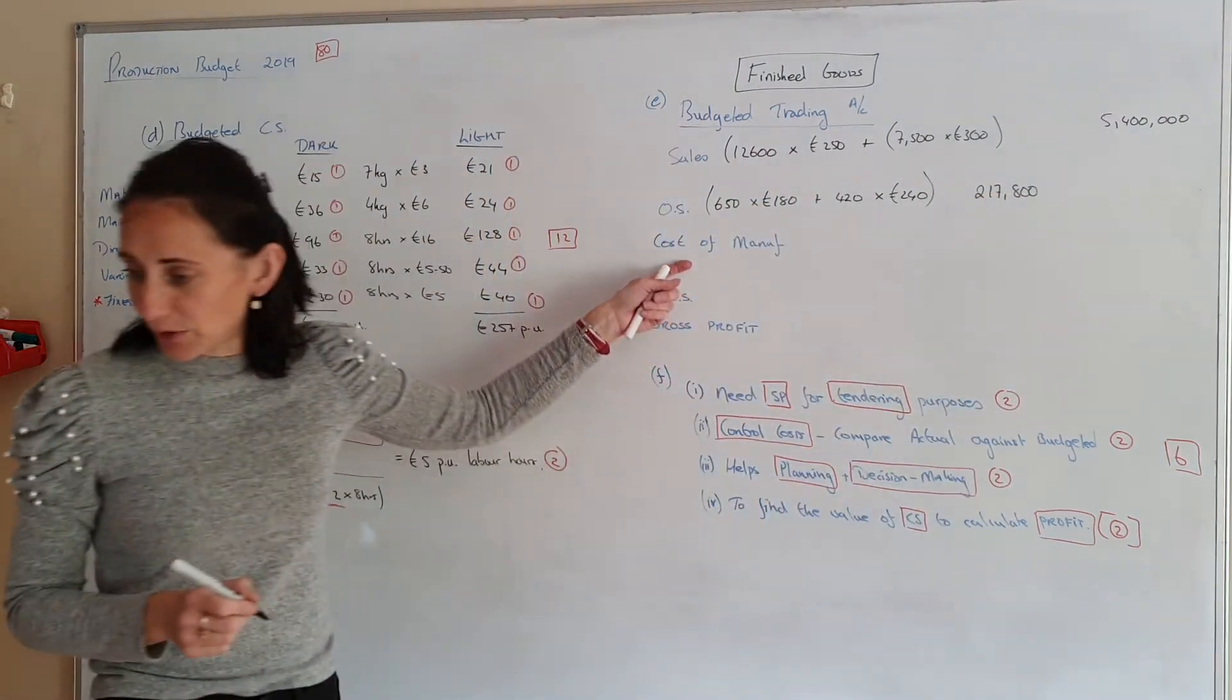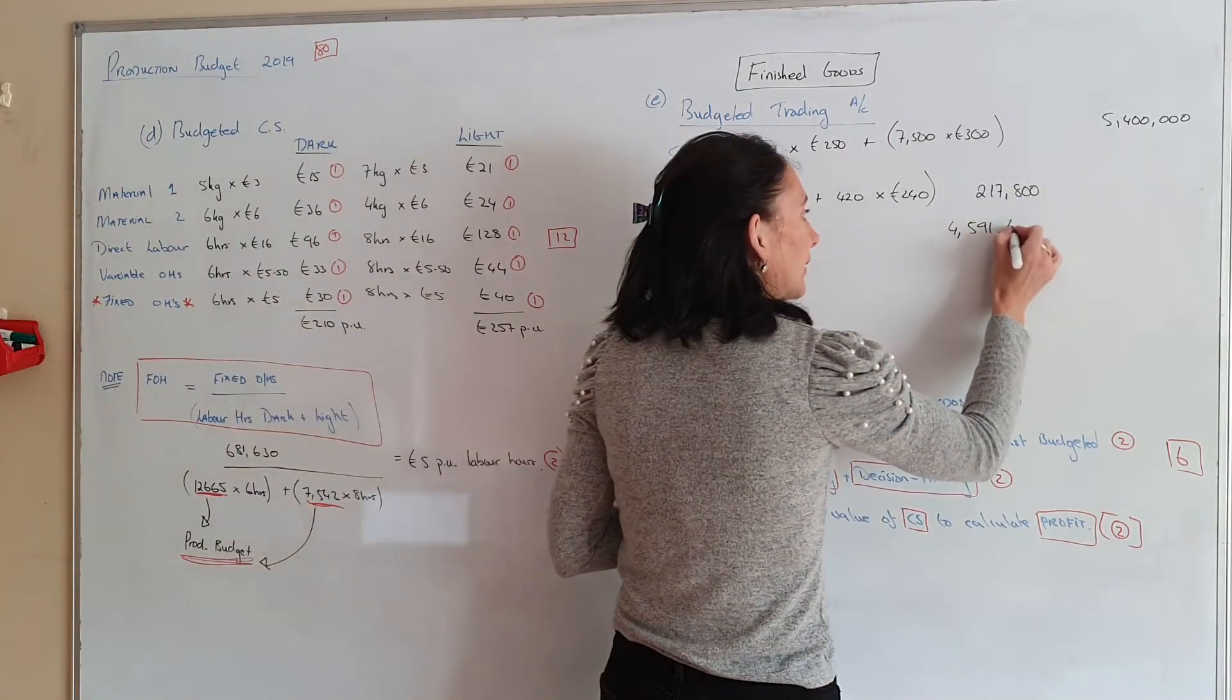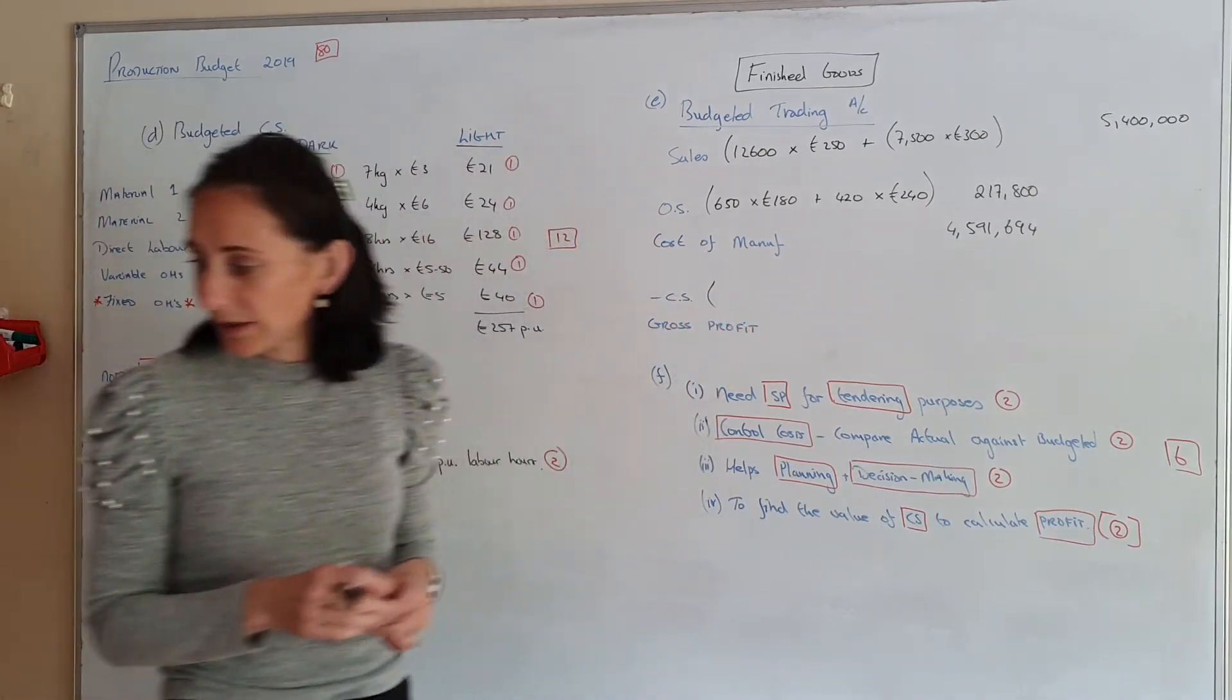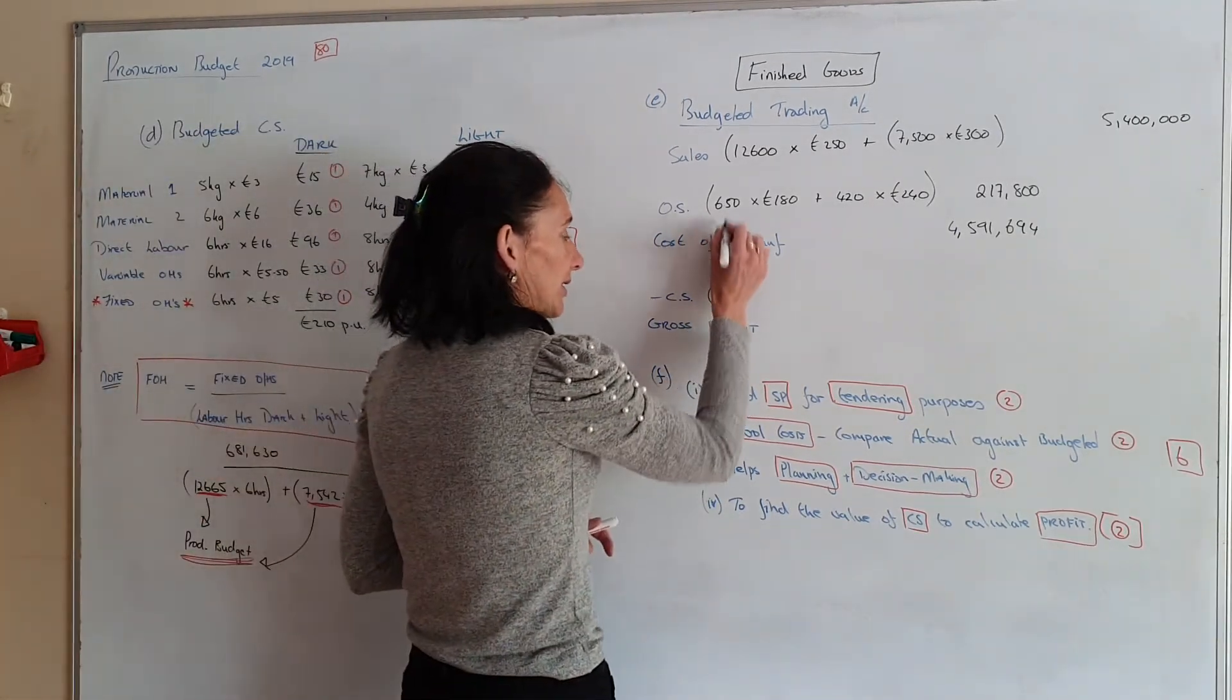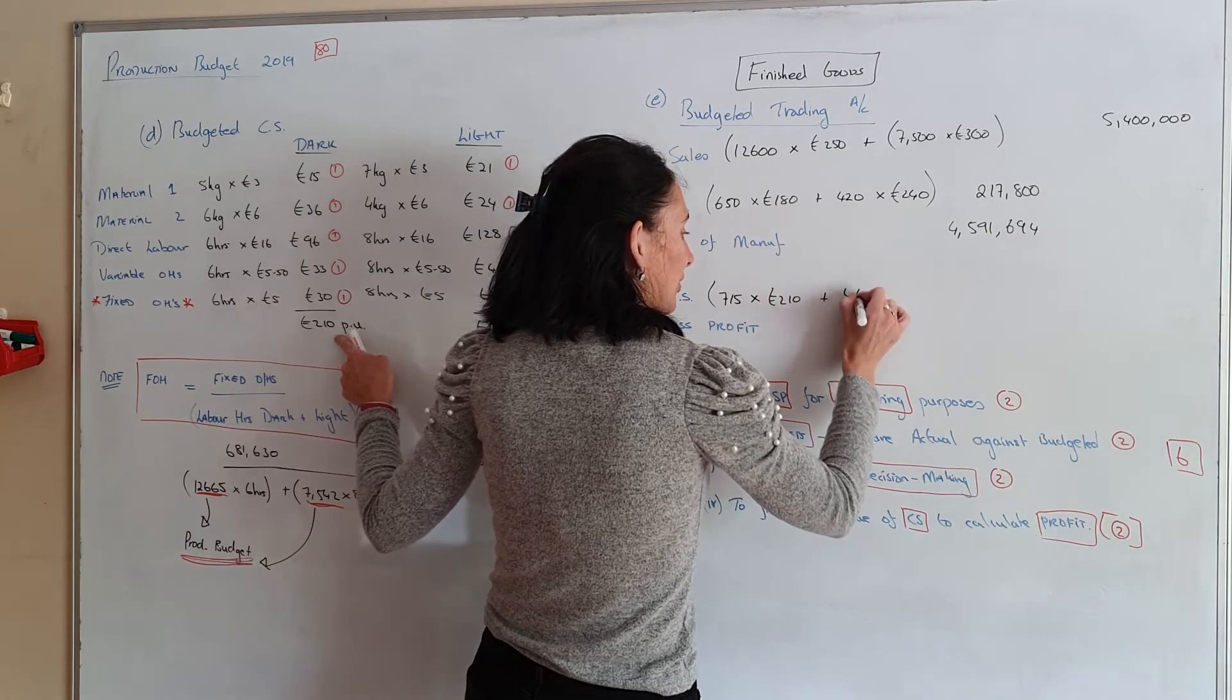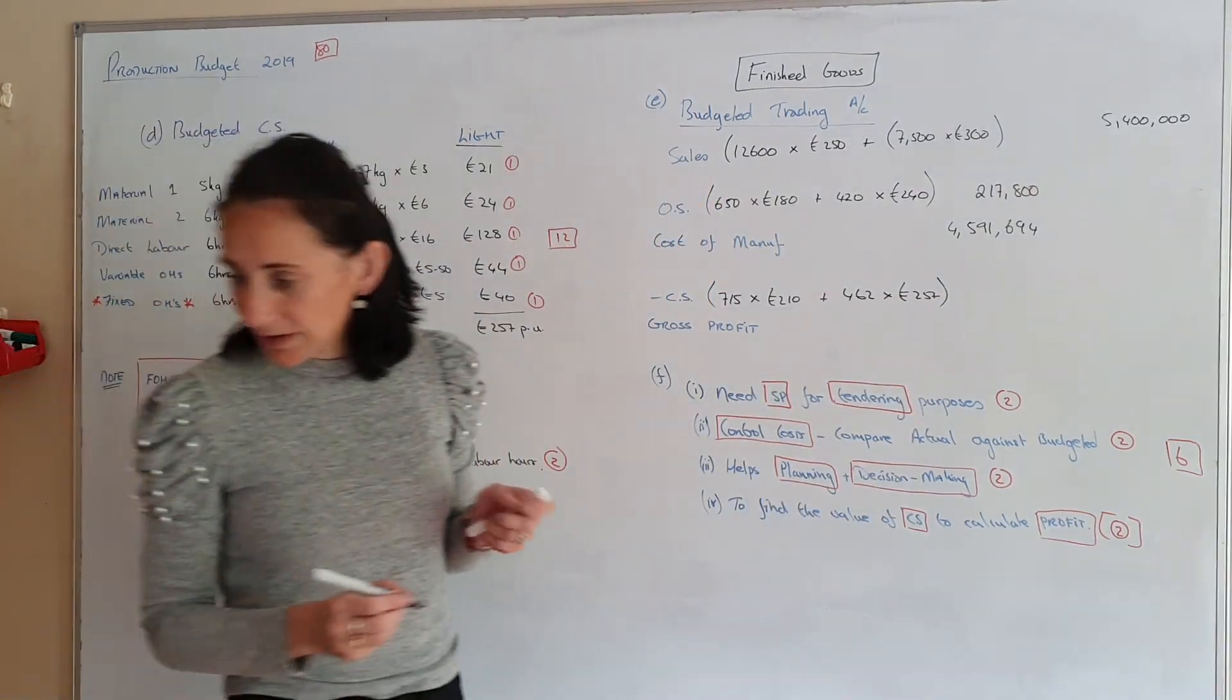This here is the answer from your manufacturing account. So that's €4,591,694. And your closing stock. Again we worked out the cost of your closing stock. You know the units of your closing stock. Because you were told that your closing stock would go up by 10%. So 10% onto that is 715 by the cost is €210. Plus 10% onto that is 462 multiply by €257. That's €268,884.